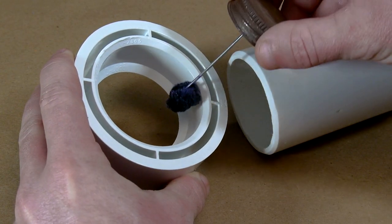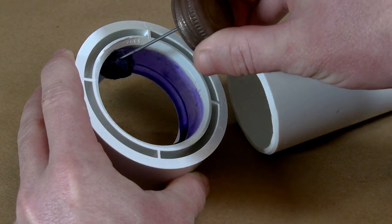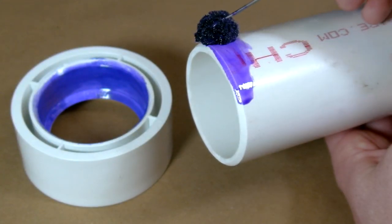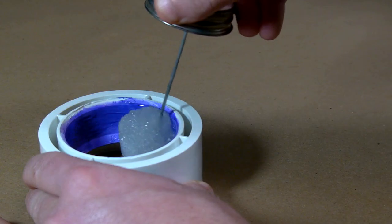The second fitting used for this project is a 3 inch to 2 inch reducer, which is glued by the same process to one end of the 2 inch diameter barrel.